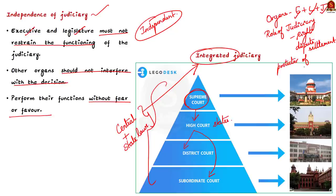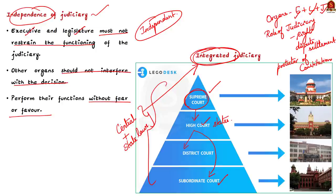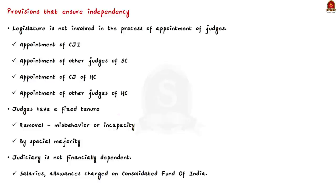We also saw the salient feature of the Indian constitution which is independent and integrated judiciary. Independent means the executive and legislature must not restrain the functioning of judiciary or interfere with its decisions. Integrated means the Supreme Court is at the top of the judicial system, below that are High Courts, and below that are subordinate courts — all enforcing both central law and state law. With that, let's move on to the next part of the discussion: independence of judiciary.